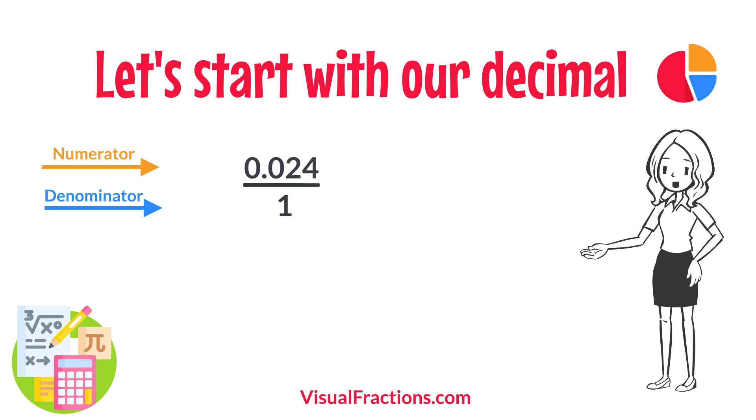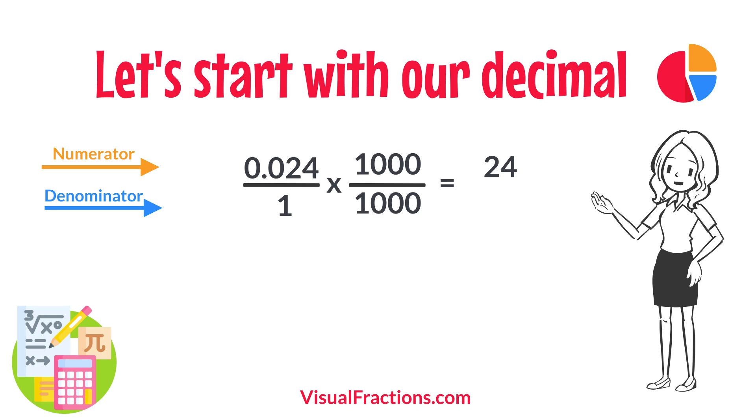This sets up the conversion process where we multiply both the numerator, 0.024, and the denominator, 1, by 1,000 because there are three decimal places. So, 0.024 times 1,000 gives us 24, and 1 times 1,000 gives us 1,000.